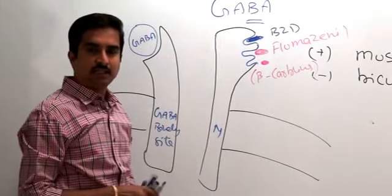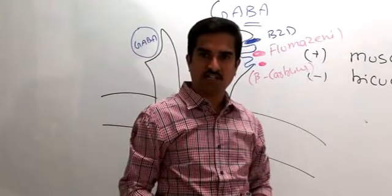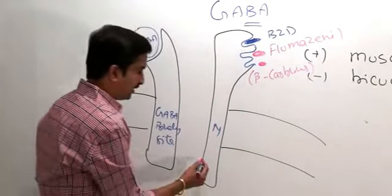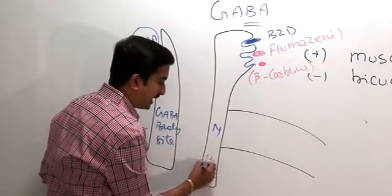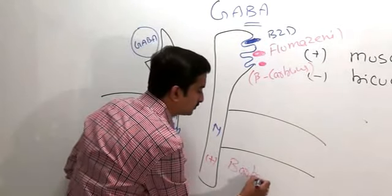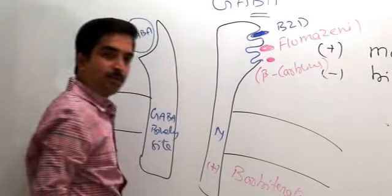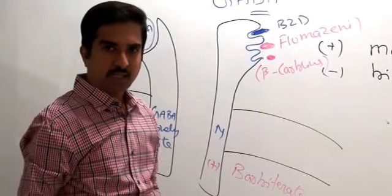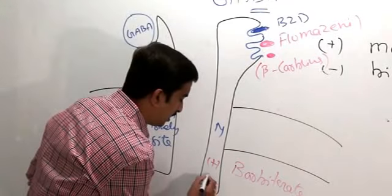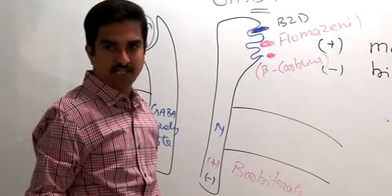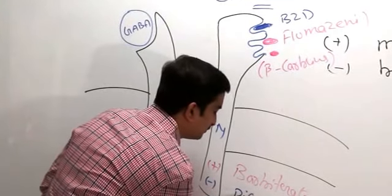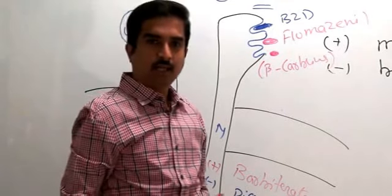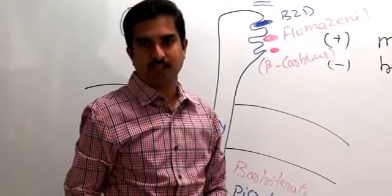In addition, there are two sites related to the chloride channel itself. The modulatory site for the chloride channel is barbiturate, which acts directly on it. The antagonist at the chloride channel is picrotoxin.